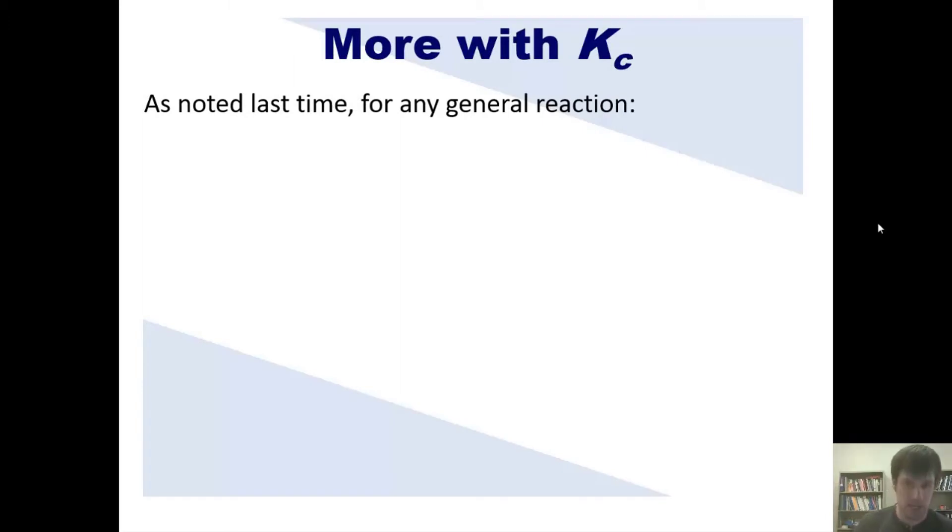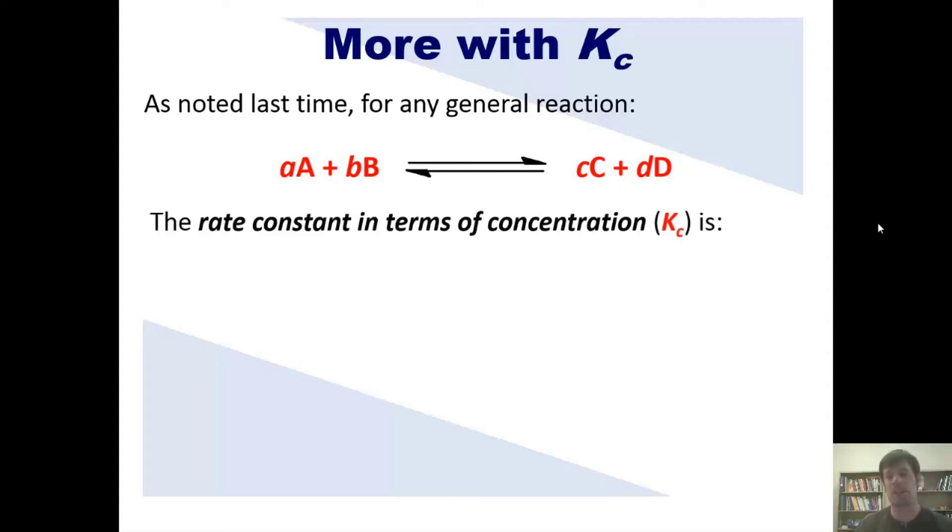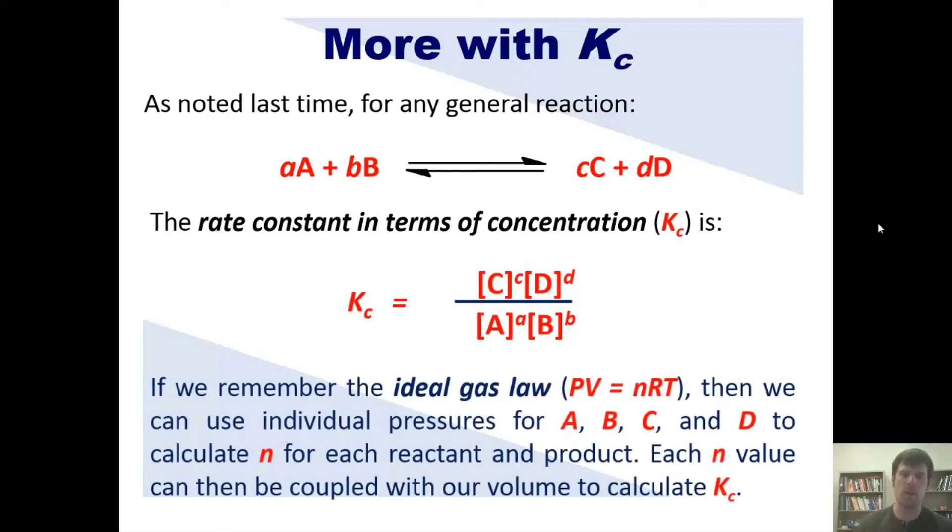As we just got done explaining, for any general reaction with this formula or anything like it, the rate constant in terms of concentration, or Kc, is this, when that reaction reaches equilibrium. Now, if we remember the ideal gas law, to which I'll link right here, then we can use individual pressures for A, B, C, and D to calculate N, the number of moles, for each reactant and component at equilibrium. Each N value can then be coupled with our volume to calculate Kc.